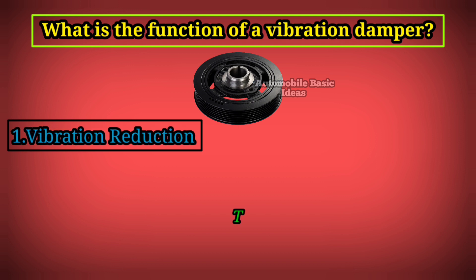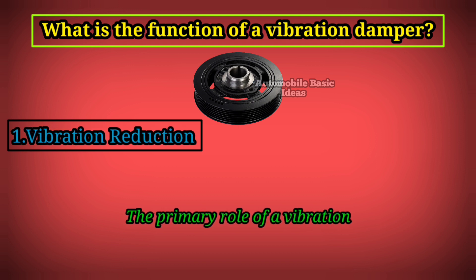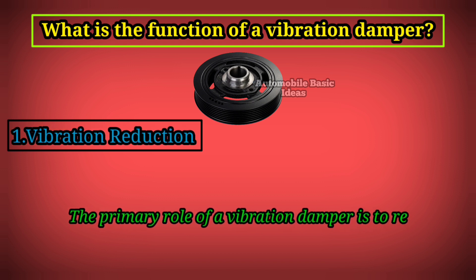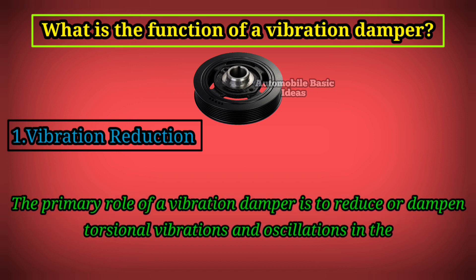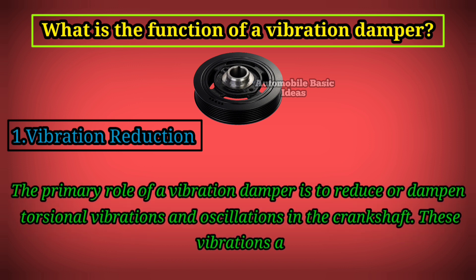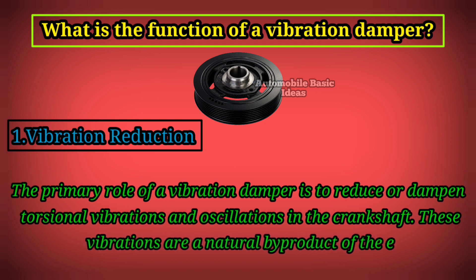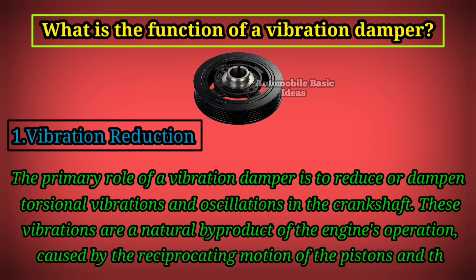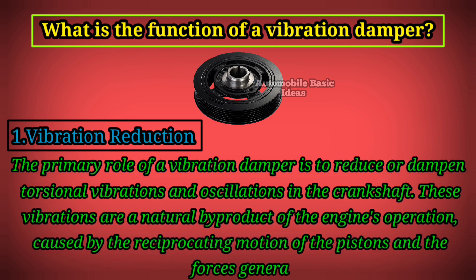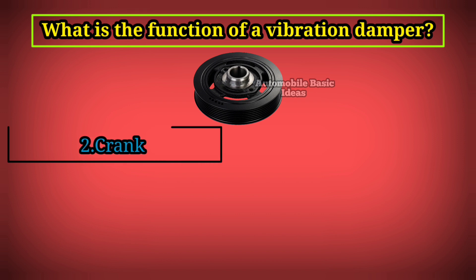1. Vibration reduction: The primary role of a vibration damper is to reduce or dampen torsional vibrations and oscillations in the crankshaft. These vibrations are a natural by-product of the engine's operation, caused by the reciprocating motion of the pistons and the forces generated during combustion.